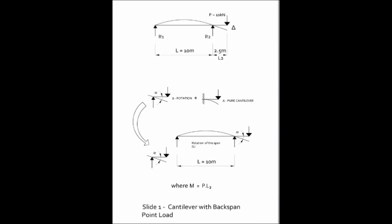So just going through the calculations, what we're going to do is look at the cantilever backspan with a point load. Just to recap, we've got this cantilever here with a backspan of 10 meters, a point load of 10 kilonewtons, and a cantilever span of 2.5 meters.